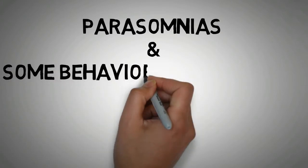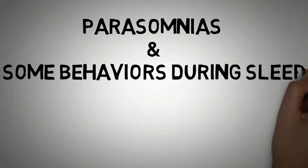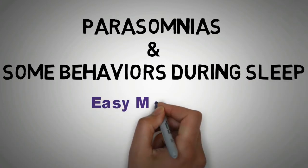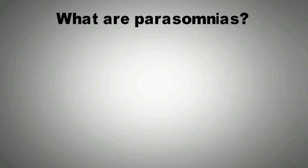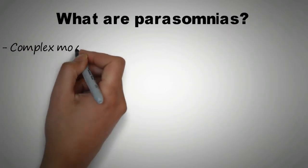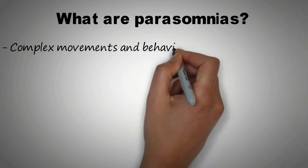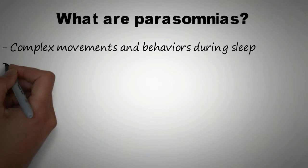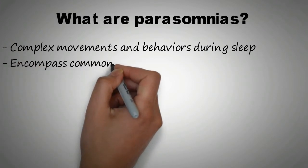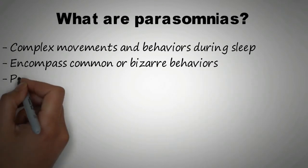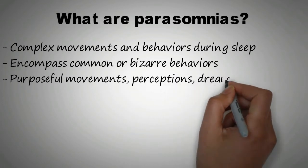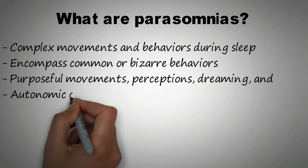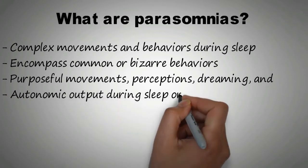Parasomnias and some behaviors during sleep — easy mnemonics. Let's begin with the definition of parasomnias. Parasomnias are complex movements and behaviors seen during sleep. It encompasses common or bizarre behaviors, and also includes purposeful movements, perceptions, dreaming, and autonomic outputs during sleep or sleep transition.